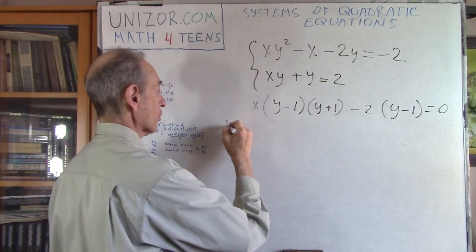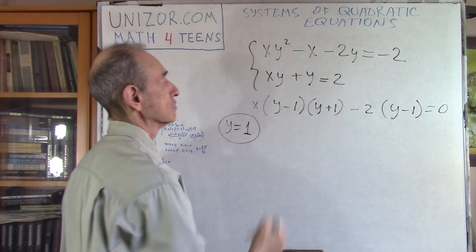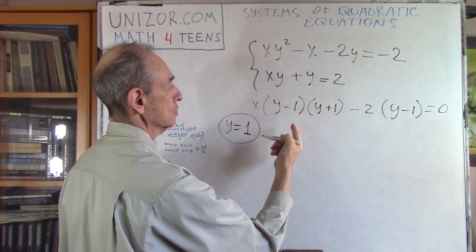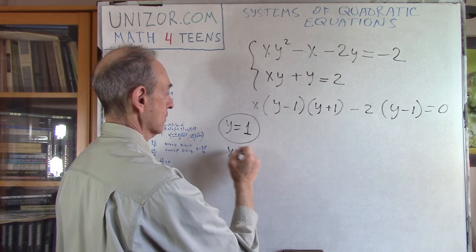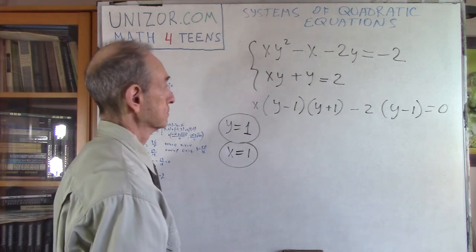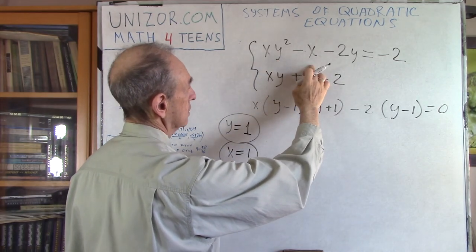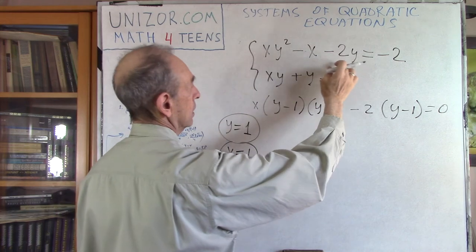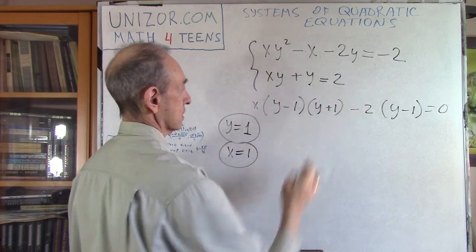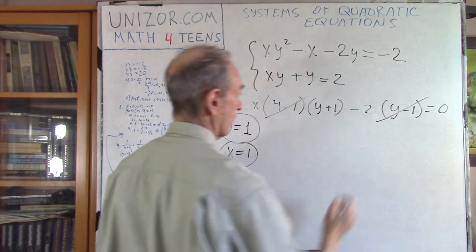And Y minus 1, Y minus 1. So the first solution is already have Y equals 1. Y equals 1, I substitute into this and this. I will have, let's say from this equation, I will have X plus 1 equals 2, which means X equals 1. That's the solution. And you can check it here.